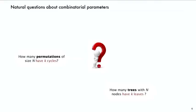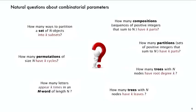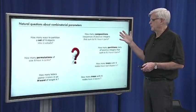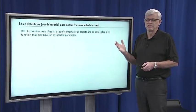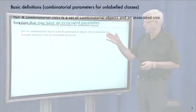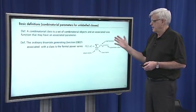Instead of talking about the average number of cycles, we're going to ask: how many permutations of N have K cycles? How many trees with N nodes have K leaves? How many compositions have K parts? So now we have two variables — the number of objects and the value of the parameter. These are natural questions rephrased using N and K. Given that, let's revisit the definition of a combinatorial class. A combinatorial class is a set of combinatorial objects with an associated size function, but now we're also going to say it may have an associated parameter — every object has a size and a parameter value.